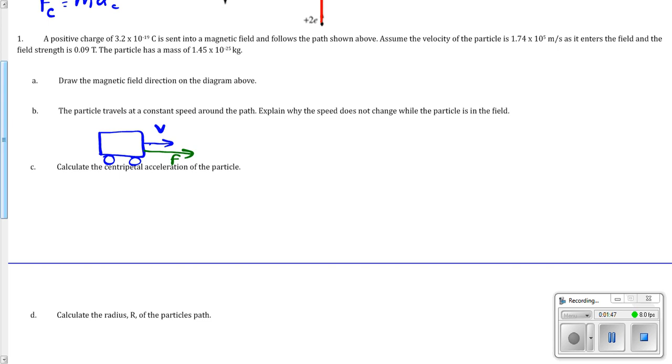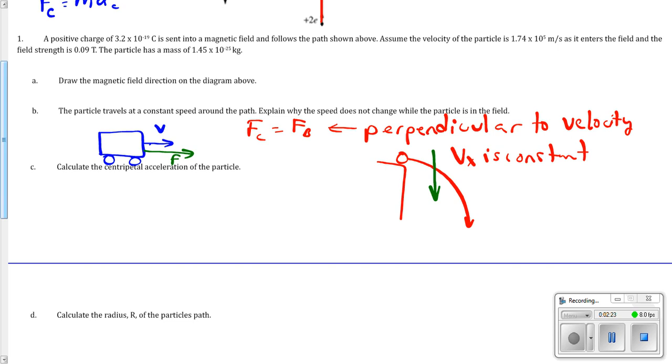The centripetal force, which is the force of the B field, is perpendicular to the velocity. This is the same reason why, when you throw something off of a cliff, the X velocity is constant. X velocity is constant, even though there's a force, because the force is being applied in the Y direction. No force in the X direction, so there's no change in velocity in the X direction.